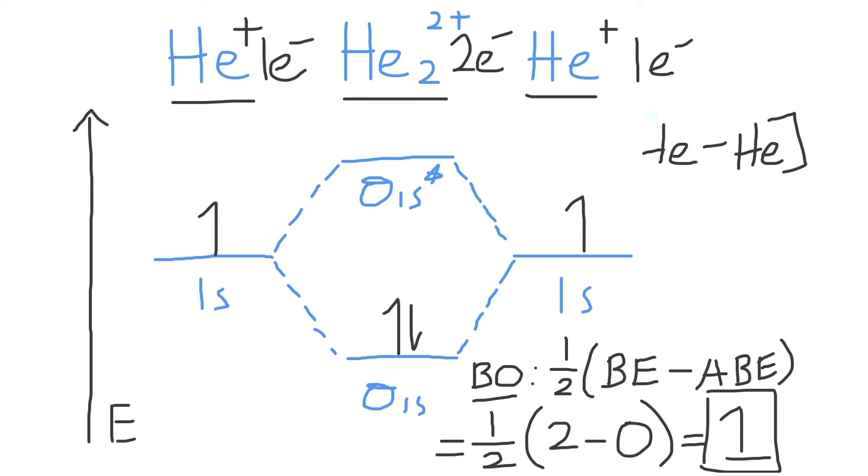Finally, is the He₂ 2+ molecule paramagnetic, or is it diamagnetic? Because there are only paired electrons within the molecular orbitals, and no unpaired electrons present, we can say that the He₂ 2+ molecule is diamagnetic, which means that the He₂ 2+ ion will be repelled by an external magnetic field.